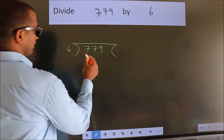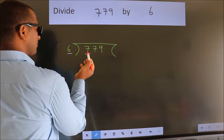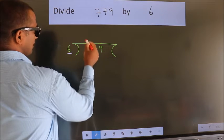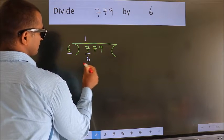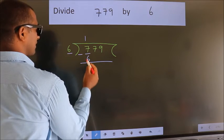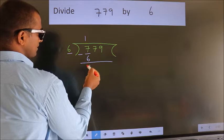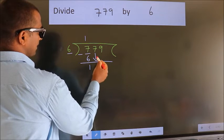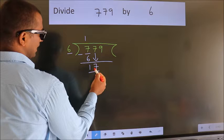Here we have 7, and here 6. A number close to 7 in the 6 times table is 6 ones, which is 6. Now we subtract and we get 1. After this, bring down the beside number. So 7 comes down, giving us 17.